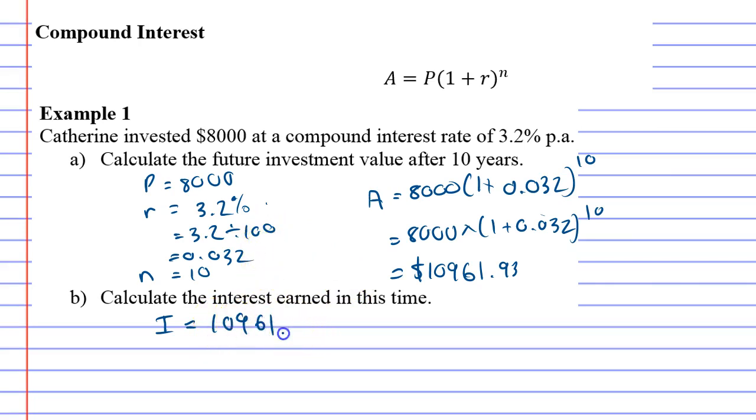We take our amount, our future value, and take away the original investment. You'll end up with $2,961.93. That is how much interest, or profit, you made from your investment.